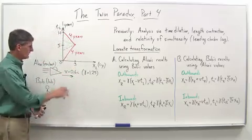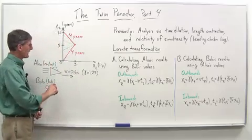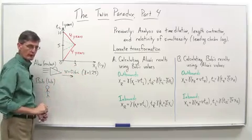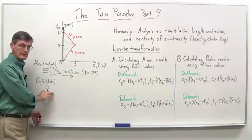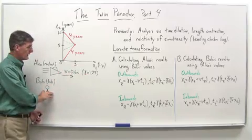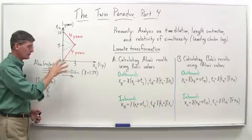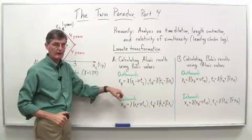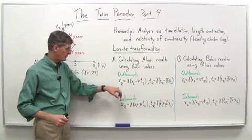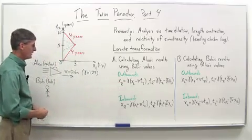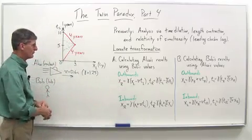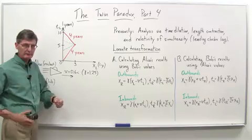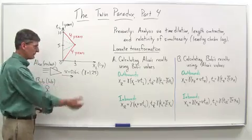Here's the situation in a smaller diagram this time. We had Alice in the rocket going at 0.6c, gamma factor of 1.25, Bob in the lab frame. And this time we're going to specifically talk about the rocket and lab frame. As you can see, over the equations here, we've got R and L standing for rocket and lab.